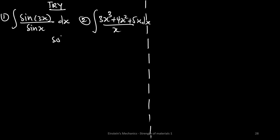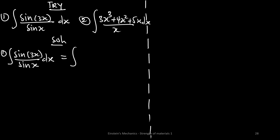We have two problems to solve. The first one is the integral of sin(3x) over sin(x) dx. We cannot cancel out — remember sin(3x) is not the same as sin(x), so you cannot cancel sin(x) into sin(3x). We have to use trig identities. sin(3x) has its own identity which expands to 3sin(x) minus 4sin³(x), everything divided by sin(x). Let's prove this expression.